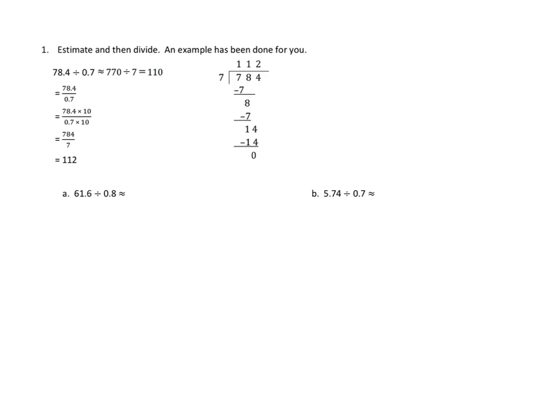So that's their estimate. Then they actually go ahead and they step through the division here. So 78 and 4 tenths divided by 7 tenths. And they say something that we said in the previous lesson, which is it would be a lot more convenient if this divisor, if this denominator were a whole number. So they say, well, let's just go ahead and multiply both the numerator and denominator by 10.